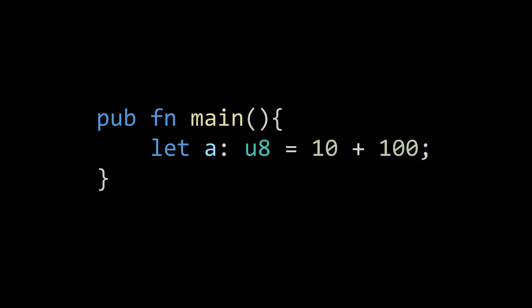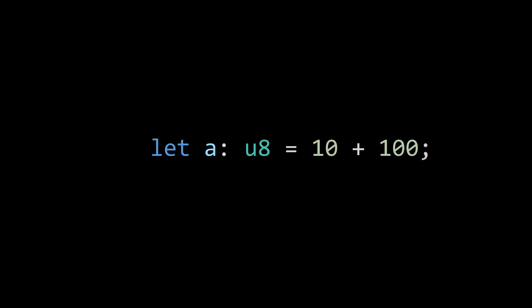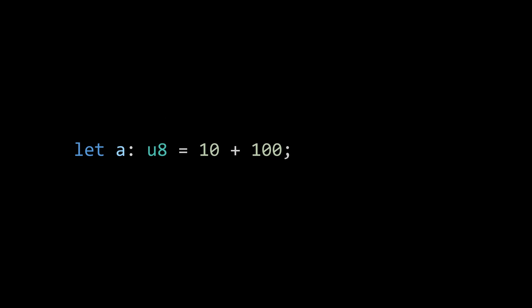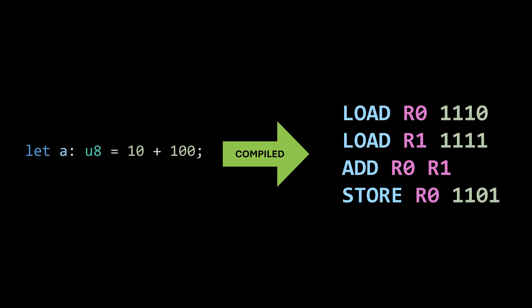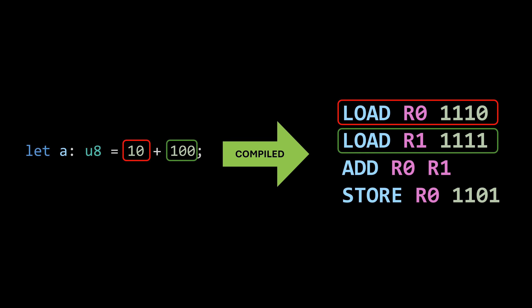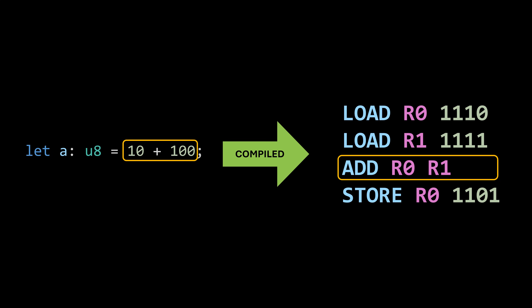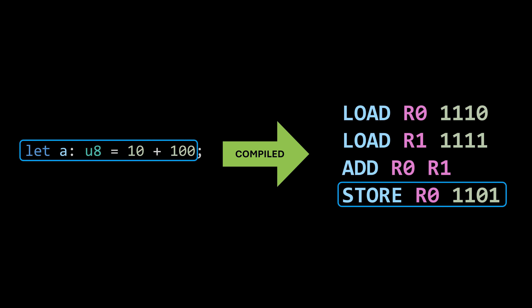If you think about it, the program we just ran is exactly what a line of code like this would look like when compiled for our tiny architecture. We load two values, add them, and then store the result in a variable. In this example, location 13 is where the content of variable A will reside in memory.